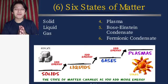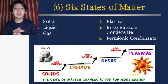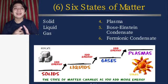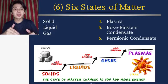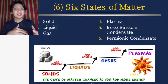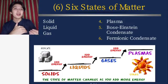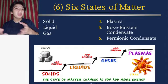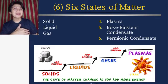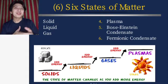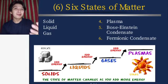These are the six states of matter: solid, liquid, gas, plasma, Bose-Einstein condensate, and fermionic condensate. As you can see in the picture, you have the different states of matter from solid to liquid to gases and plasmas. You will learn more about some of these later on.